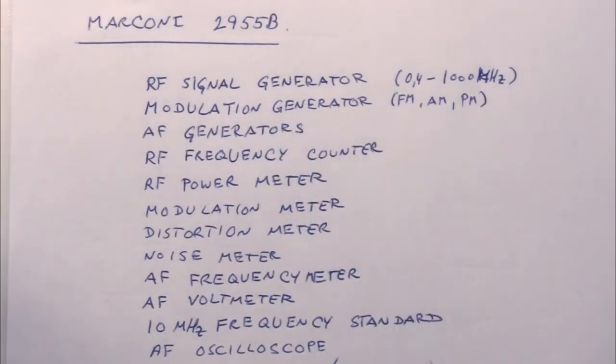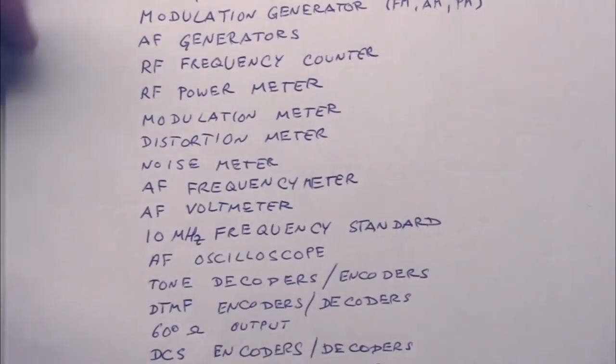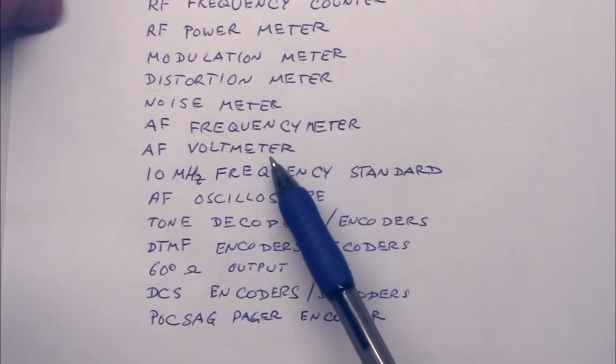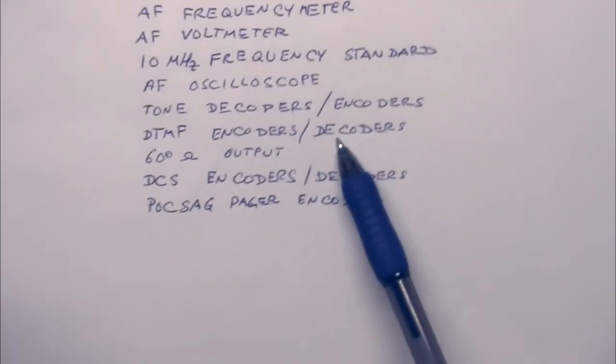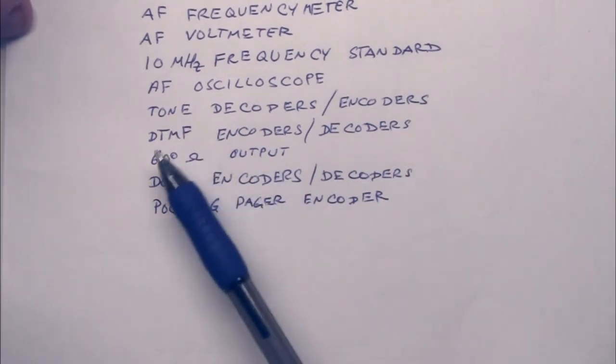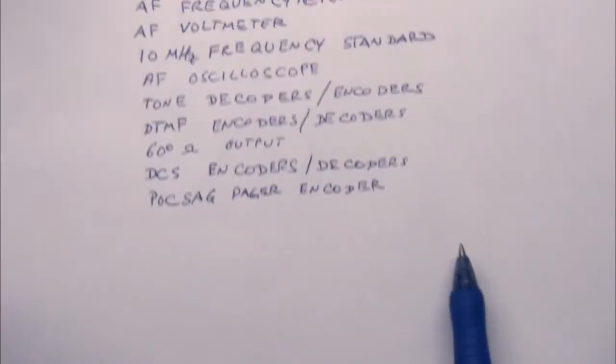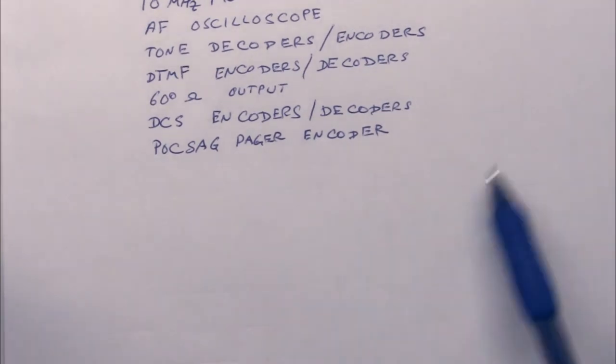It has audio frequency generators, so the signal that you want to inject can be generated by the box itself. Then it has a frequency counter, a power meter, modulation meter, distortion meter, noise meter, an audio frequency meter, an audio frequency voltmeter, 10 megahertz frequency standard, an audio frequency oscilloscope, various tone decoders and encoders, DTMF tone decoders and encoders. It has a 600 ohm output, so it can also test telephone circuits. It has DCS encoders and a POCSAG pager encoder. You can see it's a little bit outdated in that it doesn't support quadrature amplitude modulation, QAM modulation, but otherwise it's a very complete system.